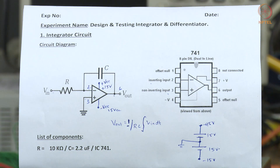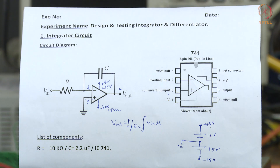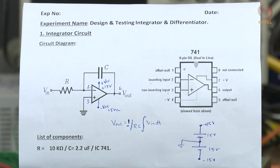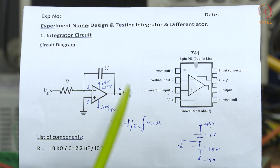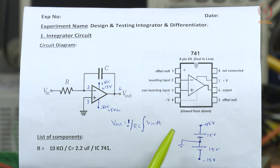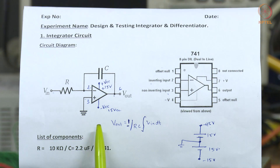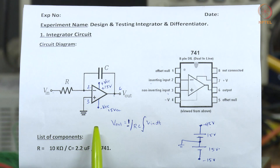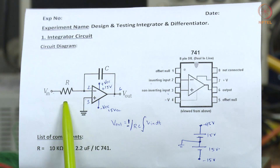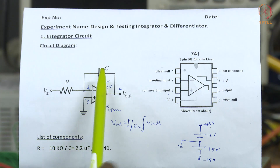This operational amplifier is used for performing analog computations, but it is also used for other purposes like addition and subtraction of analog voltages, as well as integration and differentiation, using the 741 IC. For the integrator circuit, we connect one resistor on the input side and one capacitor in the feedback.